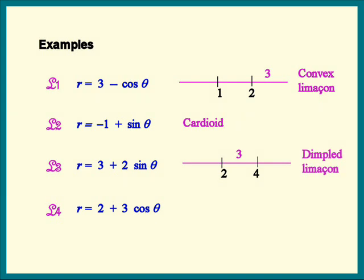The fourth one. B is 3. So let's mark off 3 and 6. A is 2 here. So it goes right in the first interval. And that means this one is a limaçon with an inner loop.